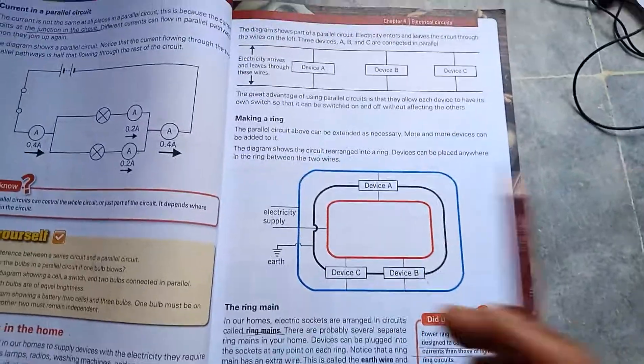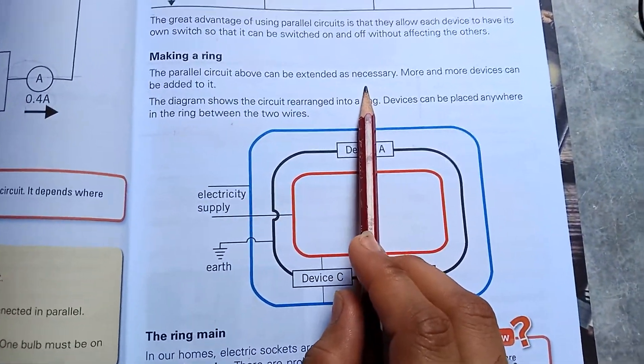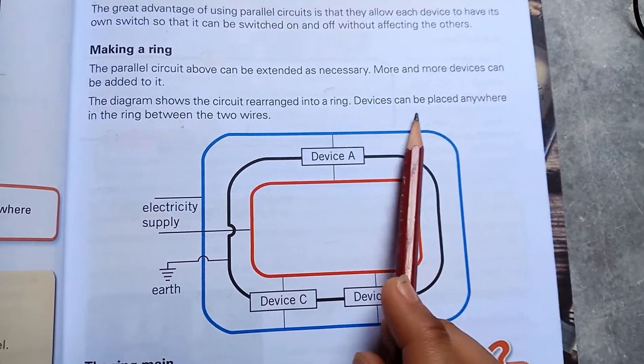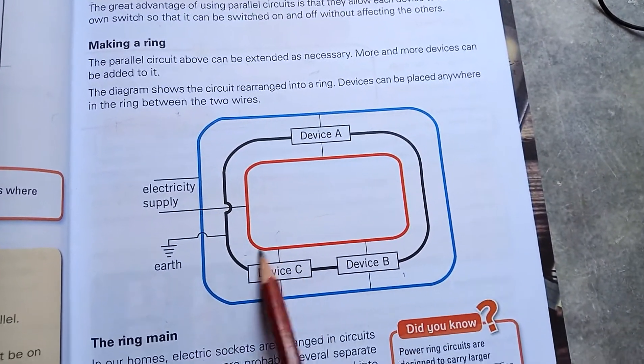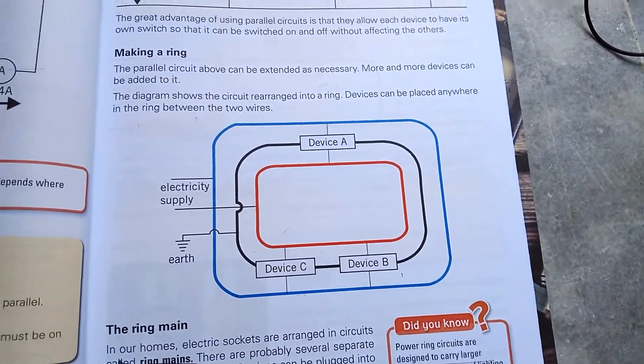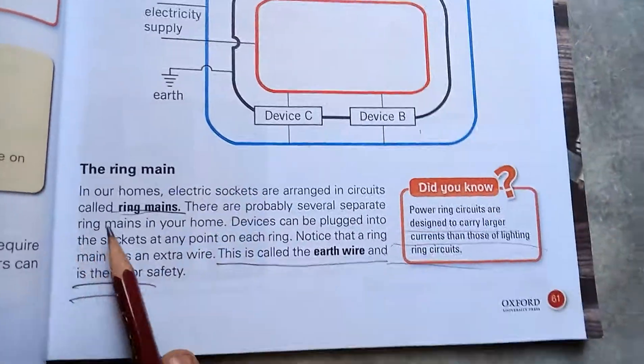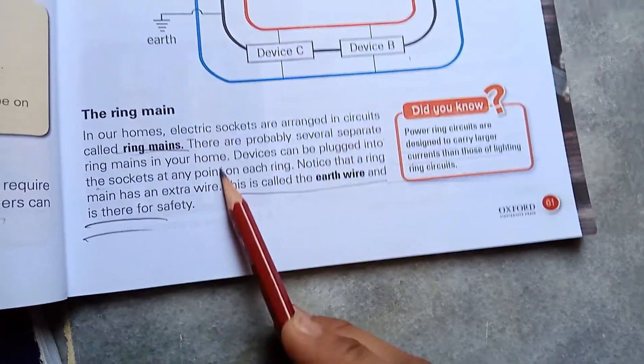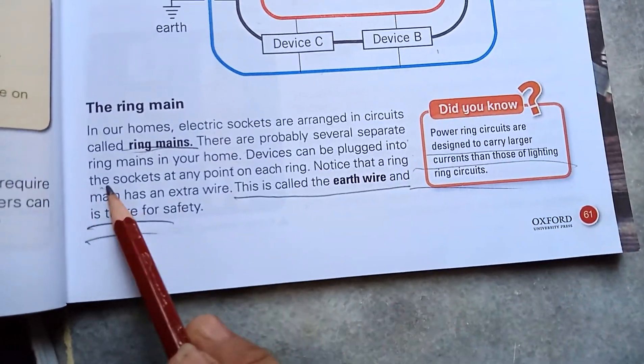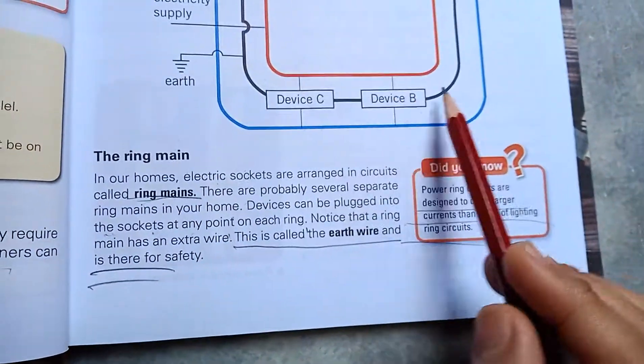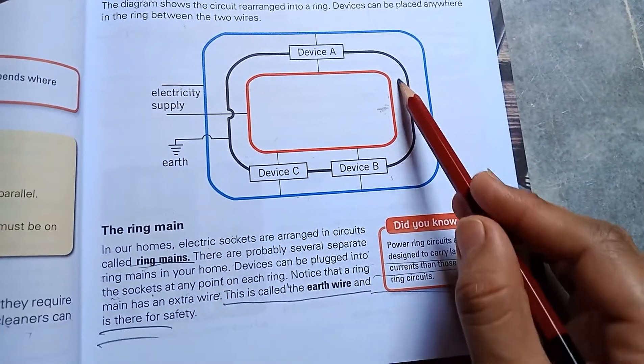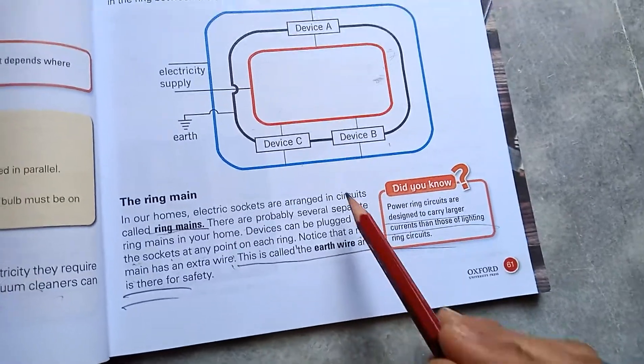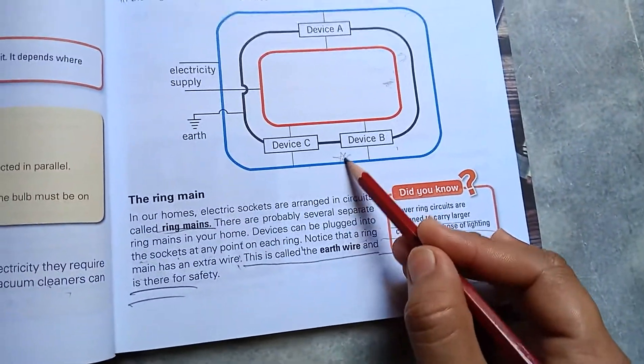Making a ring main: The parallel circuits can be extended as necessary—more and more devices can be added to it. The diagram shows them rearranged into a ring. Devices can be placed anywhere in the ring between two wires. The ring main in our homes: Electricity sockets are arranged in circuits called ring mains. There are probably several separate ring mains in your home. You can plug devices into the sockets at any point on each ring. Notice that a ring main has an extra wire called the earth wire, which is for security and safety.